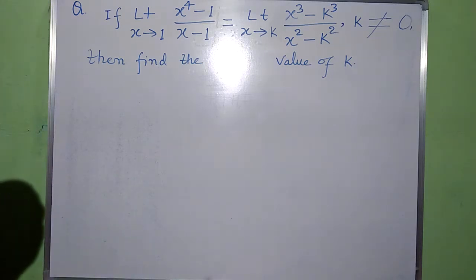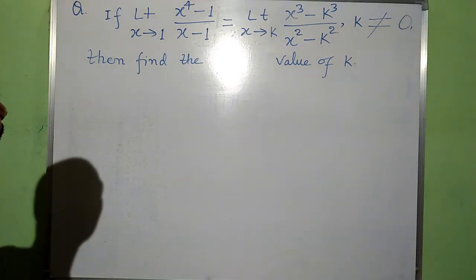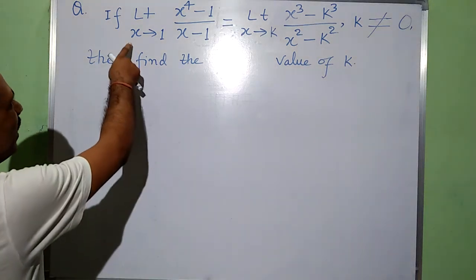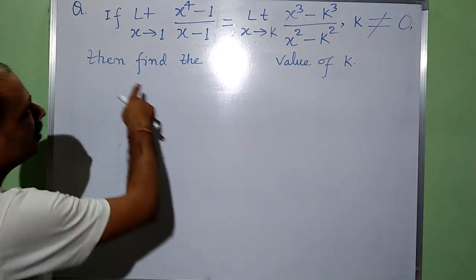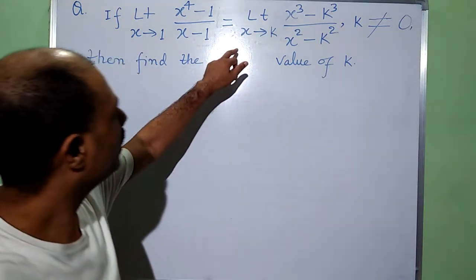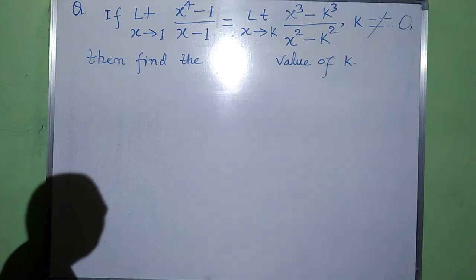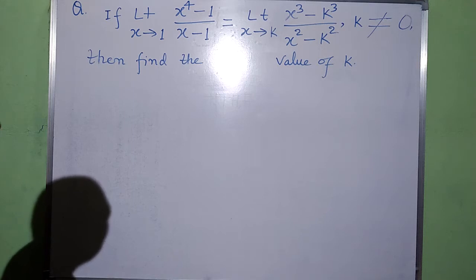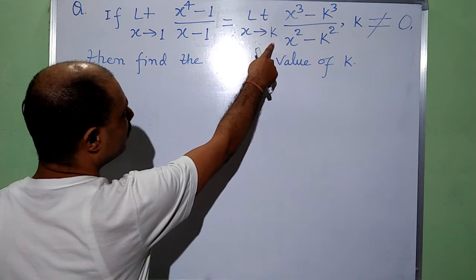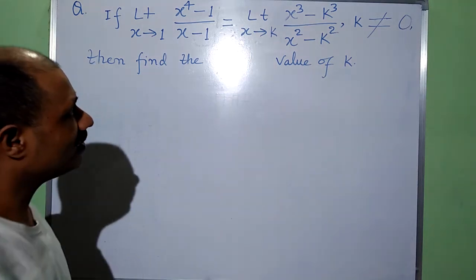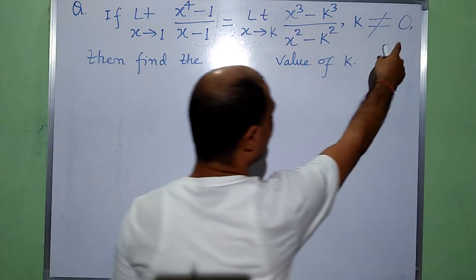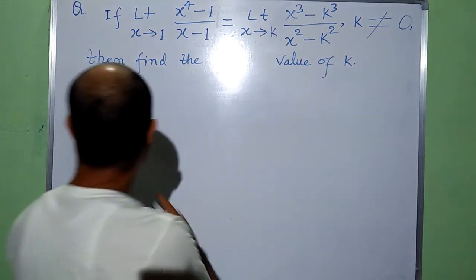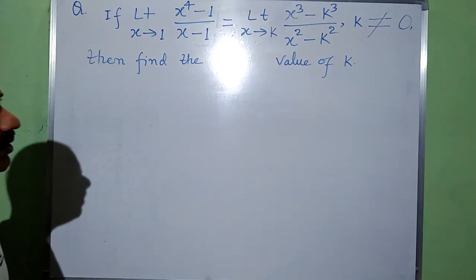If limit of x to the power 4 minus 1, divided by x minus 1, where x approaches to 1, is equal to limit of x cube minus k cube by x square minus k square, where x approaches to k and k is not equal to 0. Then find the value of k.